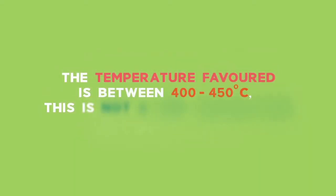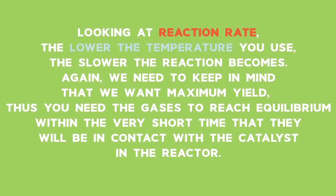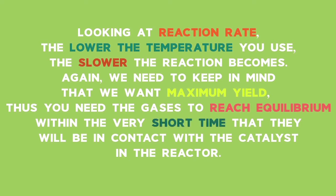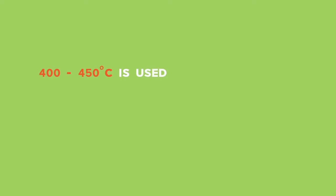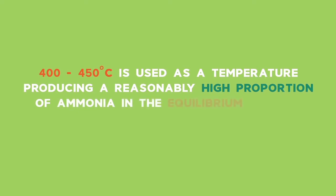The temperature favoured is between 400 and 450 degrees Celsius. That is not a low temperature in relative terms. Looking at the reaction rate, the lower the temperature you use, the slower the reaction becomes. We need to keep in mind that we want maximum yield — thus you need the gases to reach equilibrium within the very short time that they will be in contact with the catalyst in the reactor. 400 to 450 degrees Celsius is used as a temperature producing a reasonably high proportion of ammonia in the equilibrium mixture, but in a very short time.